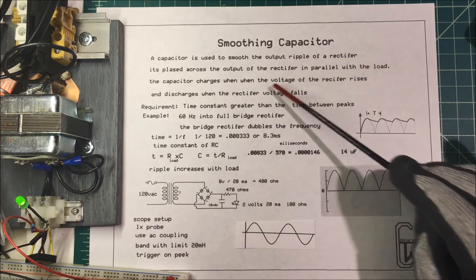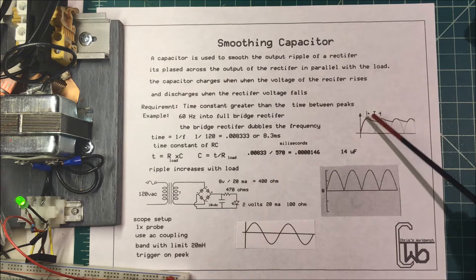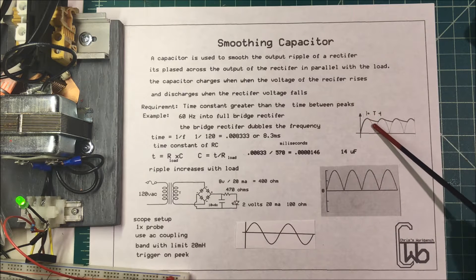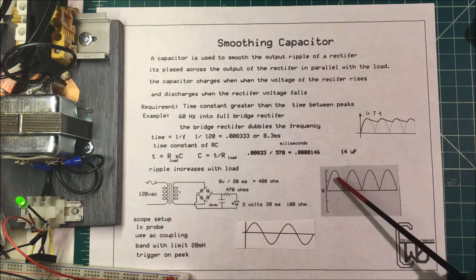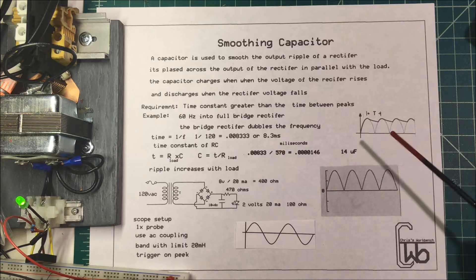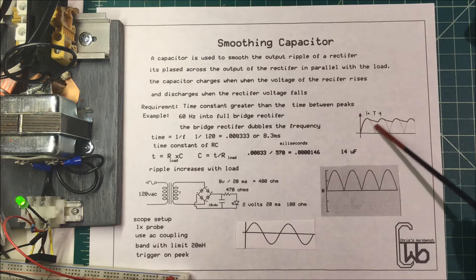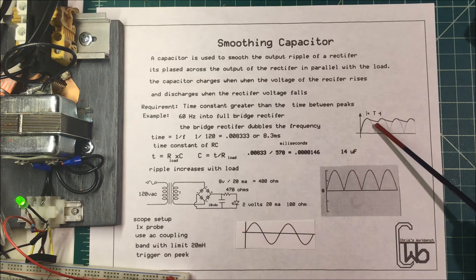The capacitor charges when the voltage of the rectifier rises and then discharges as this voltage falls off. We use it to smooth out this ripple of the DC. Now what size capacitor do we use?